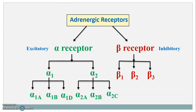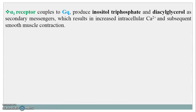These both alpha 1 receptor and beta 1 receptor are G protein coupled receptors. Even though both are G protein coupled receptors, they differ in the type of G protein which they couple. The alpha 1 receptor couples to GQ type G protein receptors and produces inositol triphosphate and diacylglycerol as secondary messengers, resulting in increased intracellular calcium and subsequent smooth muscle contraction.